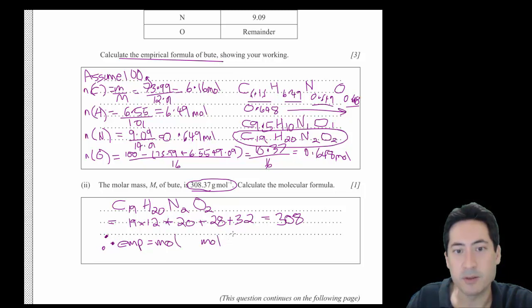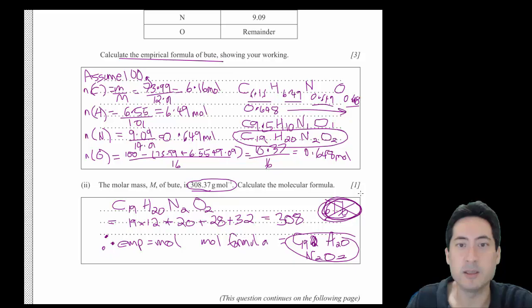So the molecular formula equals the same. I'll just write that out just so I make sure I get the marks, C19H20N2O2. Now if it was something else, like 616, it was double, then the molecular formula would just be double that. So for this one, it's exactly the same. The empirical formula is the same as the molecular formula.